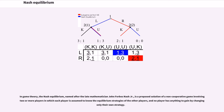Nash Equilibrium. In game theory, the Nash Equilibrium, named after the late mathematician John Forbes Nash Jr., is a proposed solution of a non-cooperative game involving two or more players in which each player is assumed to know the equilibrium strategies of the other players, and no player has anything to gain by changing only their own strategy.